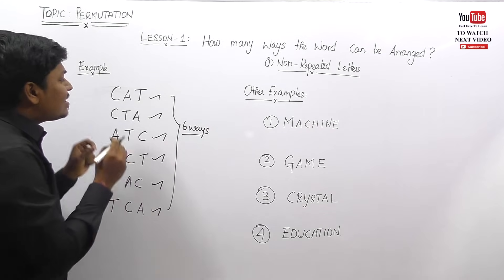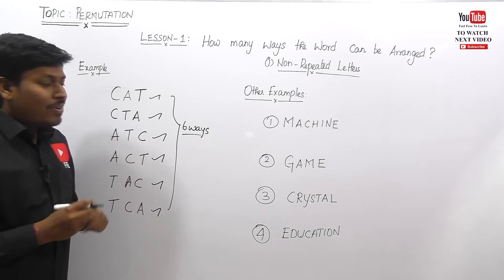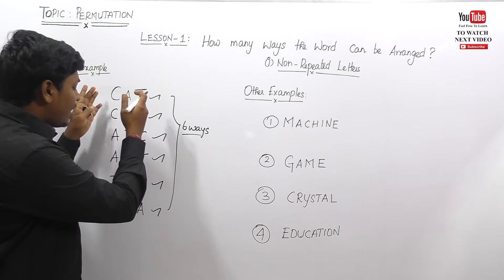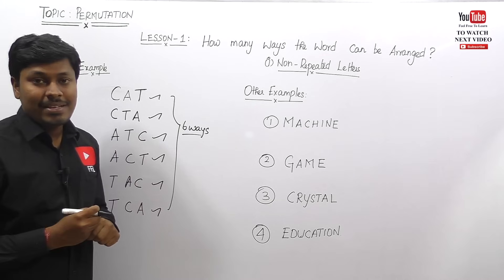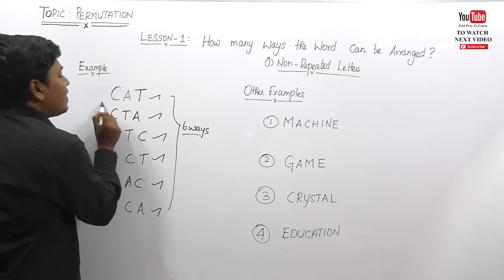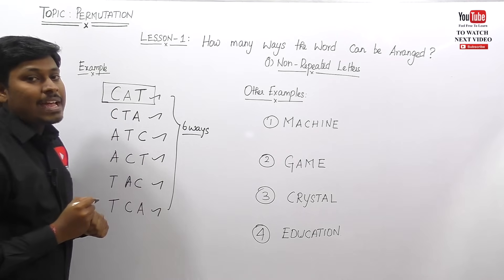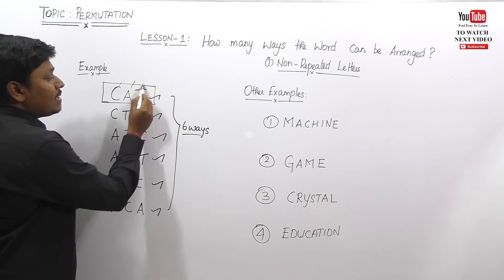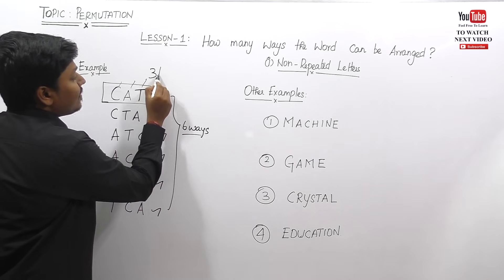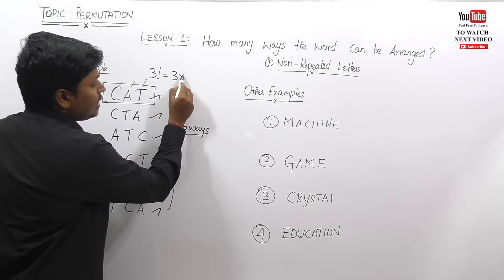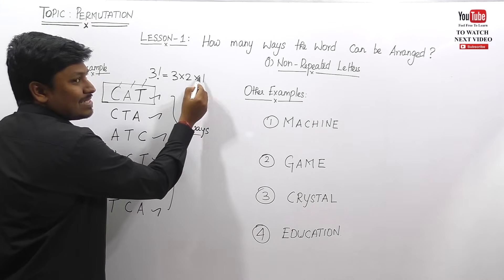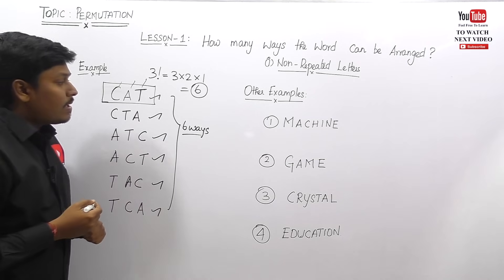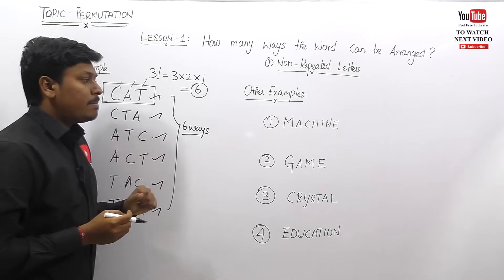This is the normal traditional method, but for example if they ask how many ways the word MISSION can be arranged, we can't write all those steps in an exam. The easiest way: for the word CAT, just count how many letters there are — C, A, T — there are three letters, so this is three factorial. Three factorial is 3 × 2 × 1 = 6, so six ways the word CAT can be arranged.